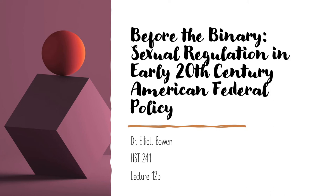Hello everyone, and welcome back to the History of Sexuality. As you know, this week in class we're looking at the making of the modern sexual binary in American culture. Why is it that today we tend to think that people are either heterosexual or homosexual? Where did these categories come from, and how did they come to dominate our thinking about sexuality? According to lots of scholars, the homo-hetero binary was something created by turn-of-the-century sexologists, who came to conceive of sexuality more in terms of object choice than in terms of gender performance.